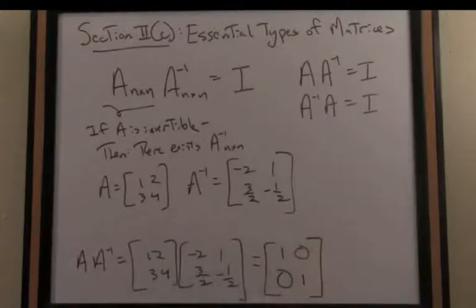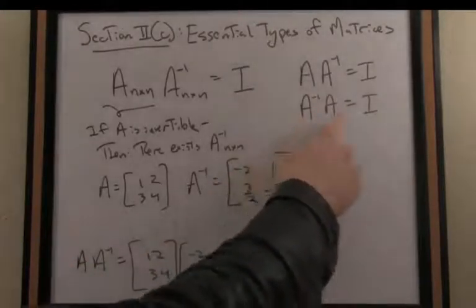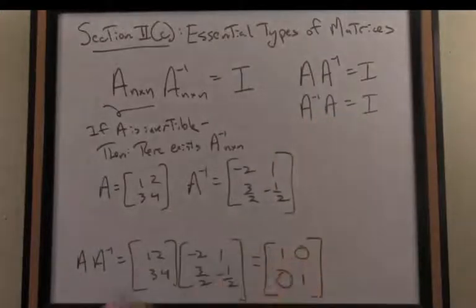So sure enough, there is the identity matrix. And again, if I swapped the order of multiplication here for the inverse of A times A, that would also result in the identity.